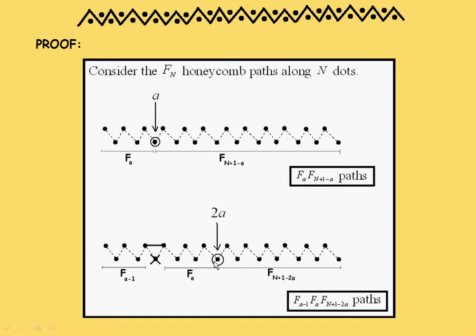Now, let's look at the paths that don't go through the ath dot, but maybe go through the 2a-th dot instead. To avoid the ath dot, I must go to the (a-1)th across to the (a+1)th dot. There's a Fibonacci number of paths that go on this first segment. There's a Fibonacci number of paths that go to this segment from here to the 2a-th dot. And there's a Fibonacci number of paths that go from the 2a-th dot to the end. So again, I get a formula for the number of paths that behave that way.